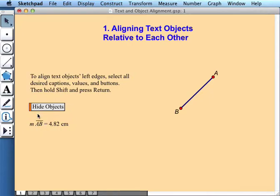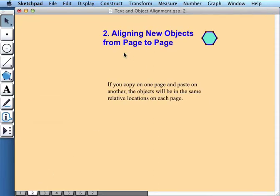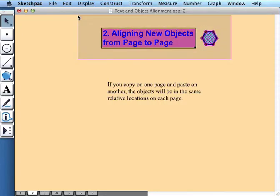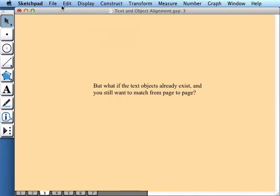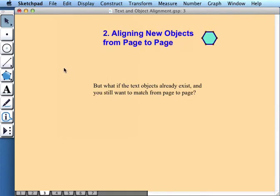But often we want things to look similar from one page to the next. So how do I put a text object in the exact same position on different pages? Well, here's page 2, and if I want to use this same title position on page 3, I can do that quite easily. In fact, the same technique even allows me to move graphics as well as text objects. All I need to do is select these objects, copy them, go to the next page and paste. So now when